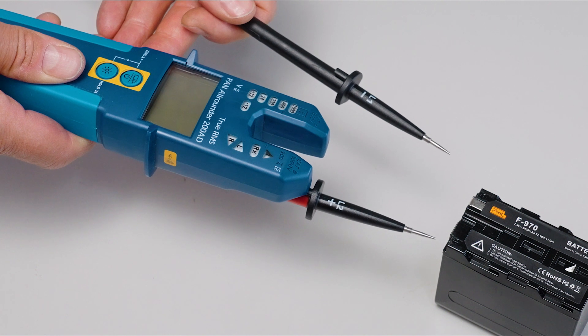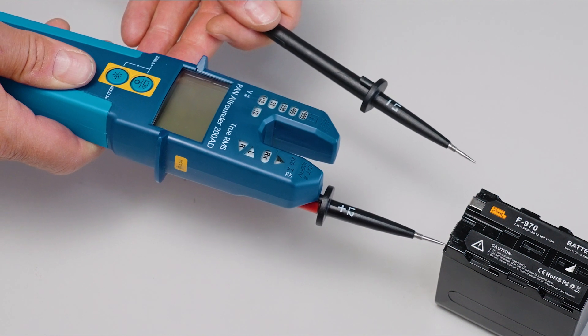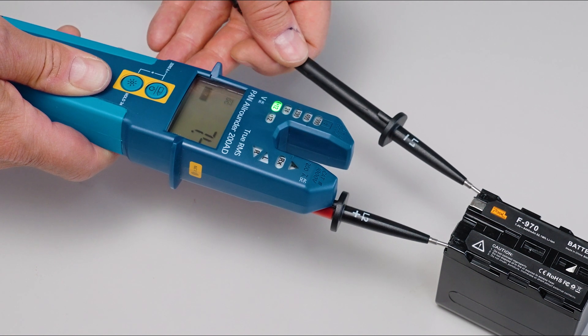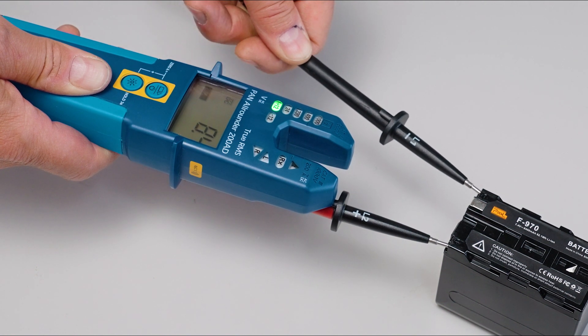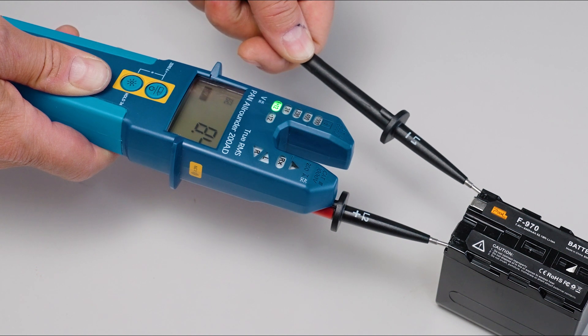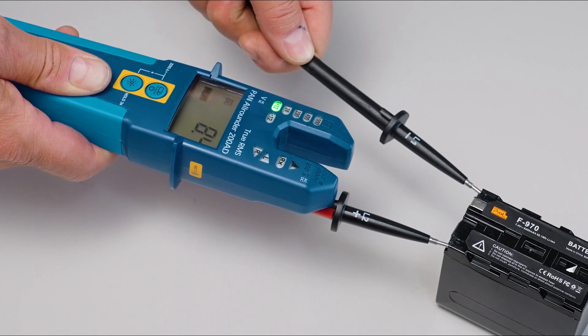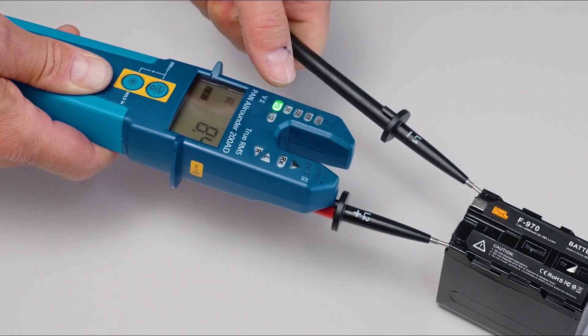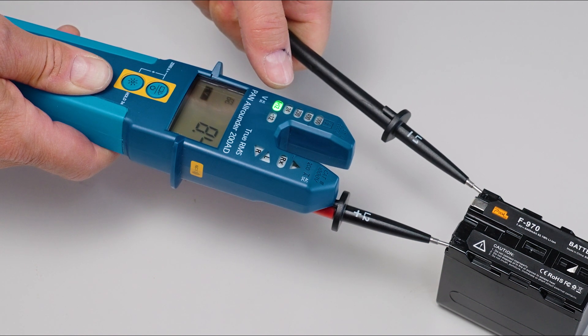As soon as the test tips touch a source of voltage, Pan Allrounder switches on automatically. It recognizes automatically if there is AC or DC voltage. Now it shows 8.4V in the display and the green 12V range LED lights up.